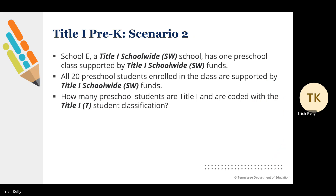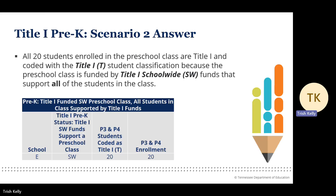Pre-K Scenario 2. School E, a Title I school-wide school, has one preschool class supported by Title I school-wide funds. All 20 preschool students enrolled in the class are supported by Title I school-wide funds. All 20 students are Title I encoded with the Title I-T student classification because the preschool class is funded by Title I school-wide funds that support all students in the class. If the school had two other preschool classes not supported by Title I funds, only the 20 students in the Title I-supported class would be Title I-T encoded accordingly.